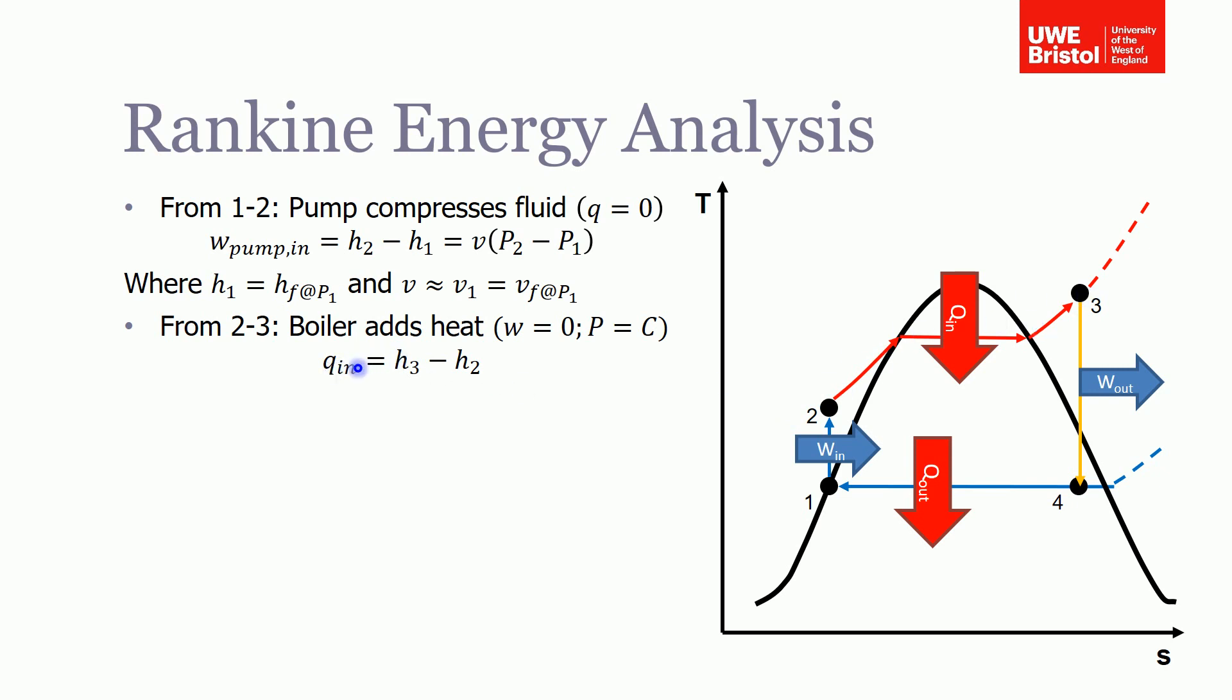Going from two to three, we can work out the amount of heat that's being supplied. Here we can say that the work is equal to zero - that makes sense, the boiler is rigid so there's no change in volume. So the heat supplied between two and three is equal to the change in enthalpy between three and two.